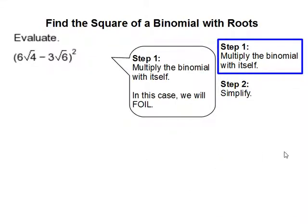Step 1: Multiply the binomial with itself. In this case we will FOIL.